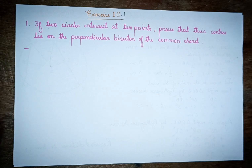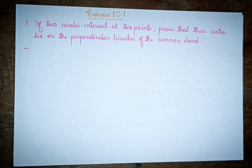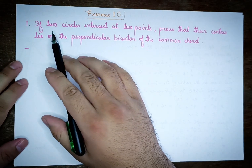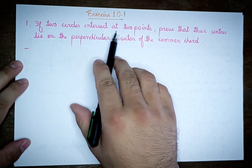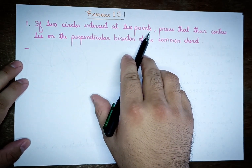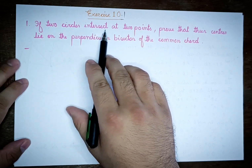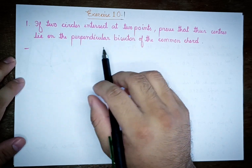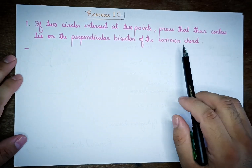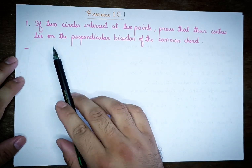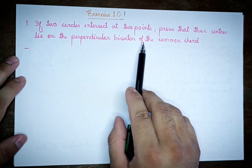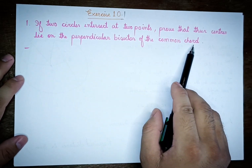Hello guys, welcome to my channel. I'm going to talk about Exercise 10.1. Exercise 10.1 is the first question: if two circles intersect at two points, prove that their centers lie on the perpendicular bisector of the common chord.